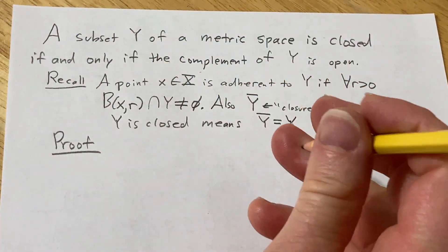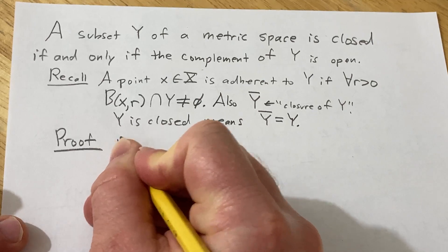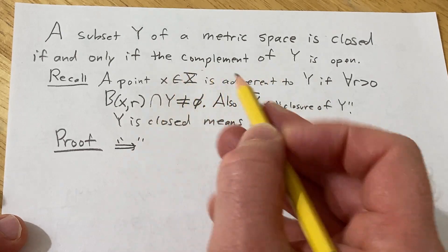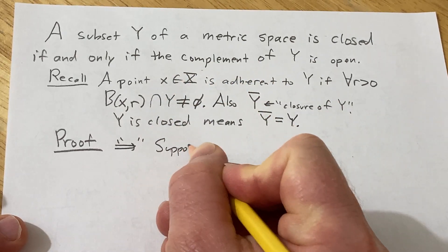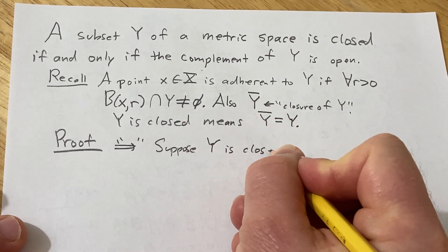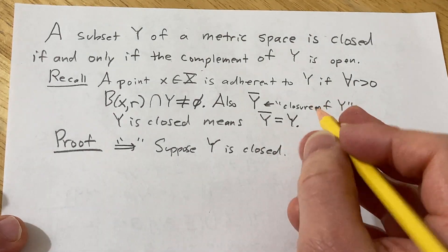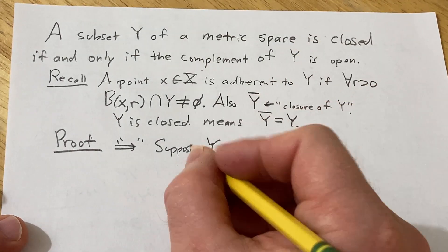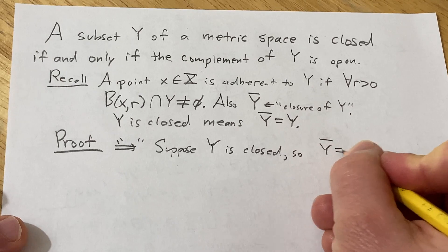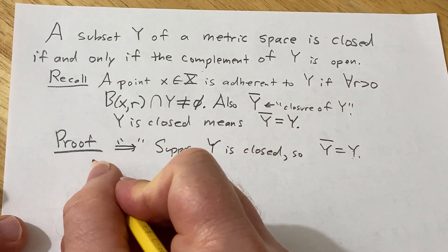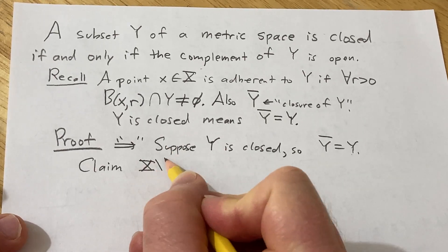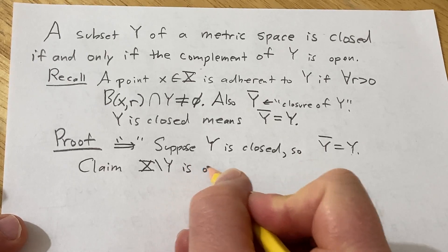Let's prove this direction first. We'll start by assuming that Y is closed and then show that the complement is open. So suppose Y is a closed subset of a metric space. What does it mean for Y to be closed? This means that the closure is equal to Y. The claim is that the complement, X set minus Y, is open.